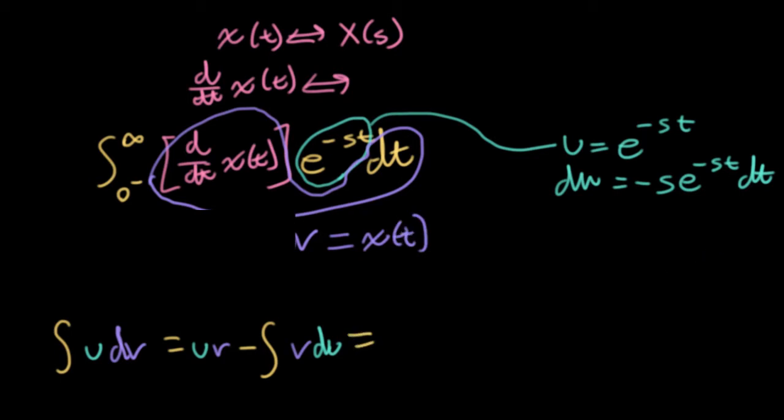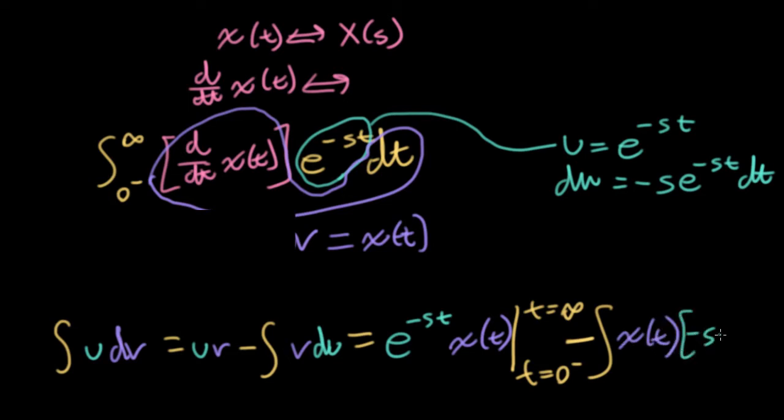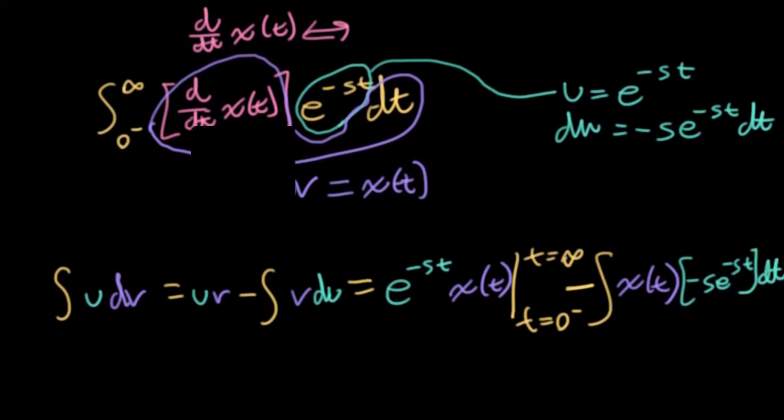All right, so substituting these things in, I have e to the minus st, which is our u, times v, which is just xt. And this is all going to be evaluated at t equals zero and infinity. And now we're going to subtract the integral of v, which here is just x of t, times du, which is this minus s e to the minus st dt.